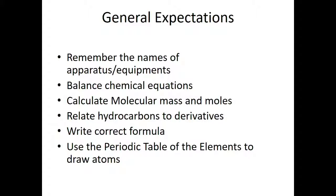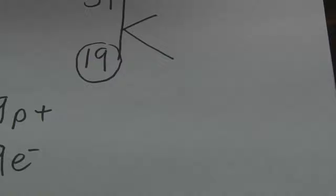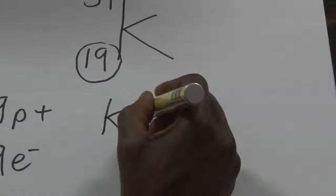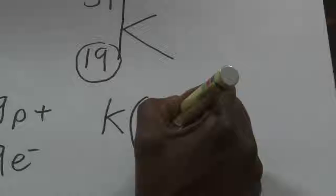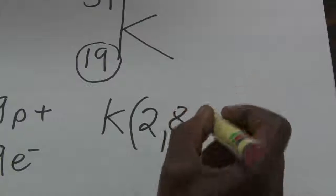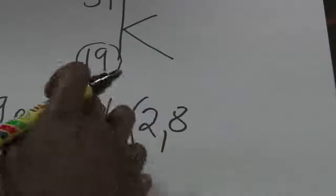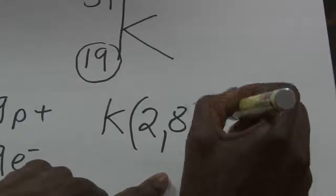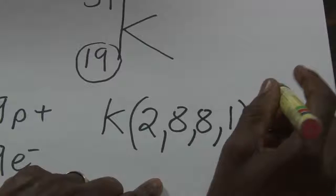The last point says: use the periodic table of the elements to draw atoms. Here I have the details of potassium: atomic number 19, mass number 39. I want to draw an atom of potassium. First I need the electronic configuration of potassium. So K — in the first shell it takes two electrons, and in the second shell it takes eight electrons. So far I have used 10 of the 19, meaning I have nine more. The third shell can also take up eight, and then the last shell takes one electron.